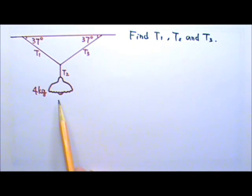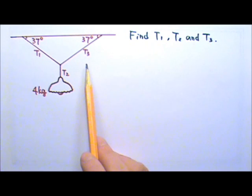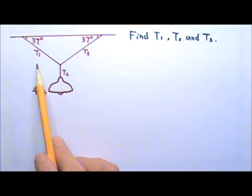A 4kg lamp is hung using 3 cables as shown. Find the tension in each cable.